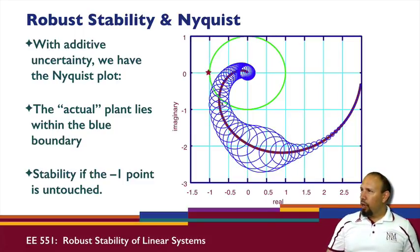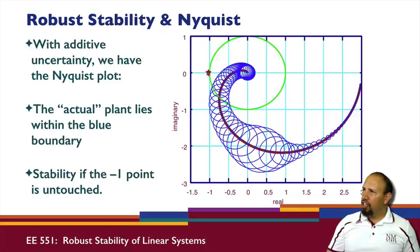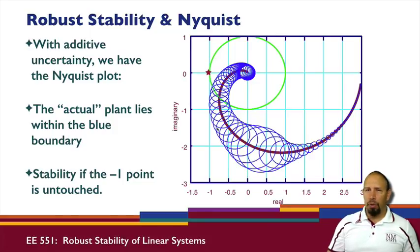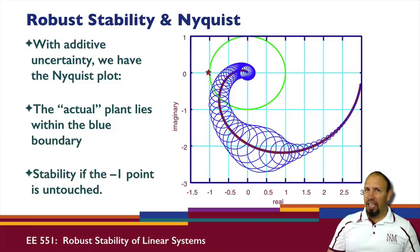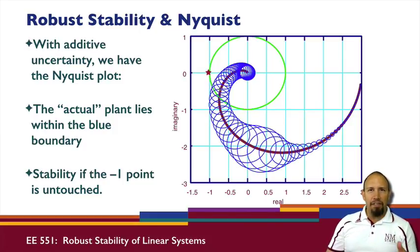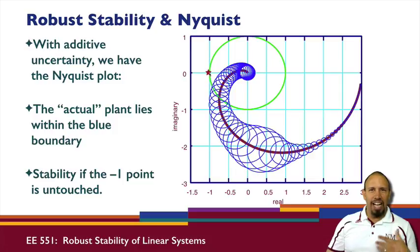The important thing is not whether the Nyquist plot encircles the minus one point, but whether this band touches that minus one point. This band is like error bars around our Nyquist plot. As long as that band does not touch the minus one point, we know our system is stable for all uncertainties. If it does touch that point, that does not mean the system is unstable, because this condition is stable for all uncertainties — that's why it is conservative.